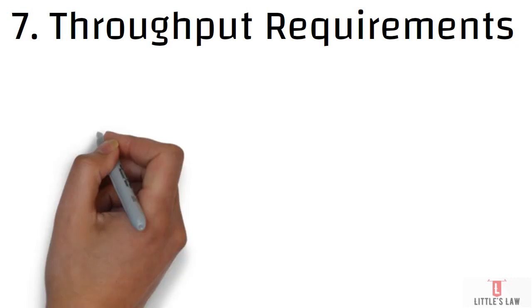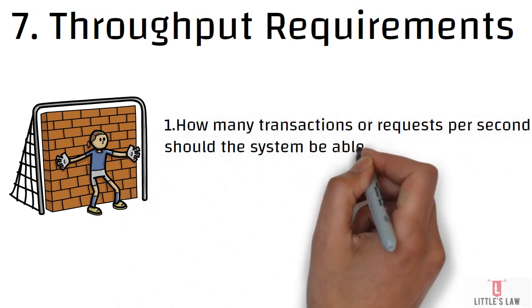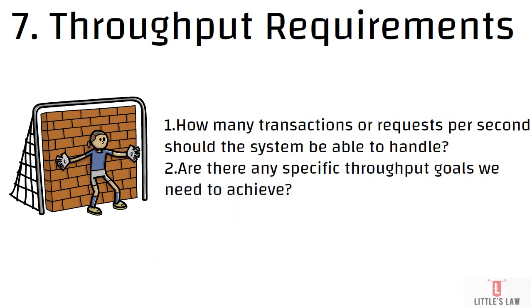The seventh question covers throughput requirements. You should understand how many transactions or requests per second the system should be able to handle, and whether there are specific throughput goals to achieve. For example, a client might ask you to achieve 10,000 hits in one hour with 100 users. You also need to understand the throughput goal for each type of load test being conducted.